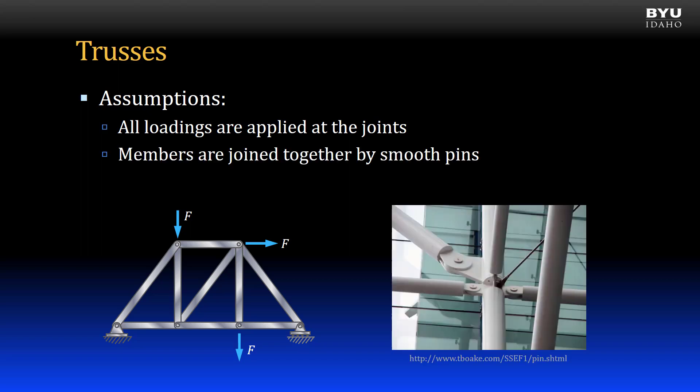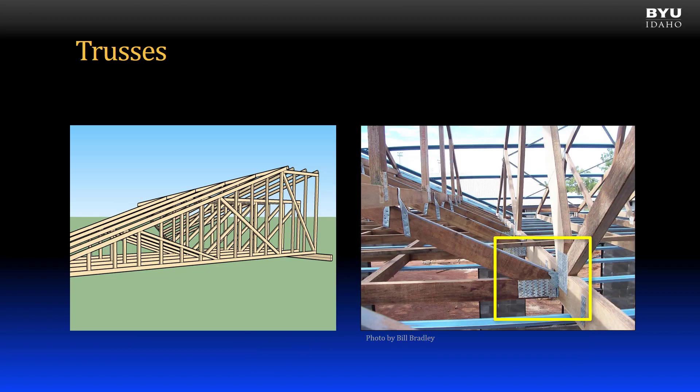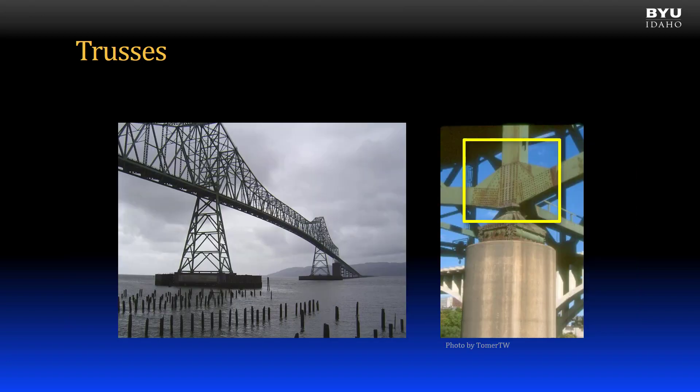The second assumption is that all members are joined together by smooth pins. In real structures this assumption is rarely met. In typical residential roof trusses, members are connected by nail plates that can bend and permit some rotation, sort of like a pinned connection, so this assumption is often used in design. In larger structures, metal plates called gusset plates are often used to connect members at the joints. Like the nail plates in roof trusses, gusset plates can deform and do allow some rotation at the joint, so the assumption of a pin connection when analyzing the structure is often used.